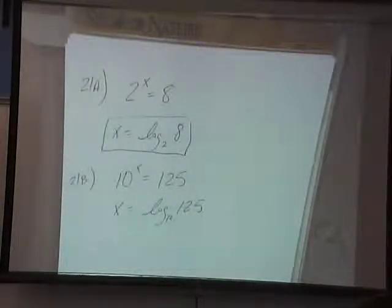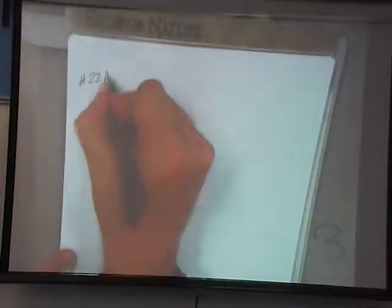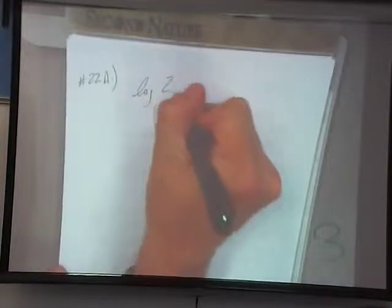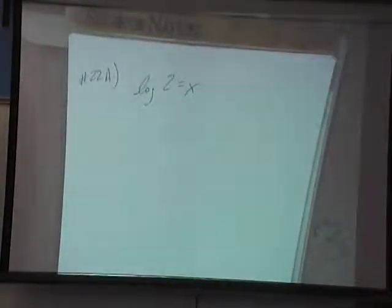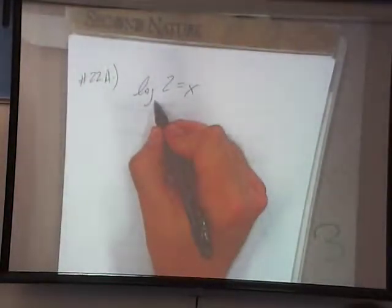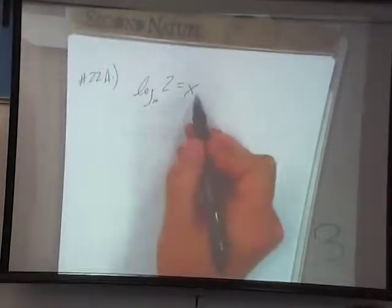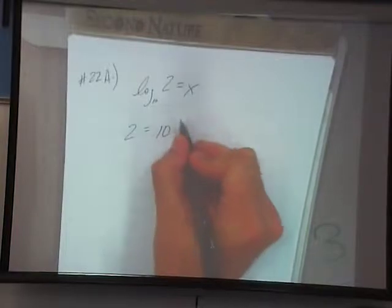Questions on 21? Alright, 22. These are in logarithmic form. They want us to put them in exponential form. So my base here is 10. So we'll move the base over and get rid of the log. So 2 is equal to 10 to the x power.